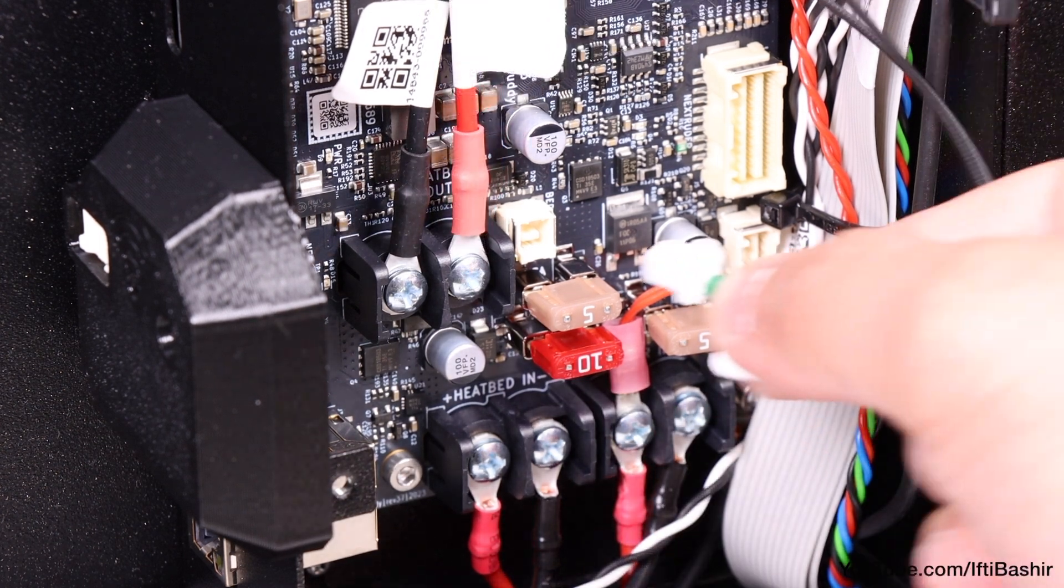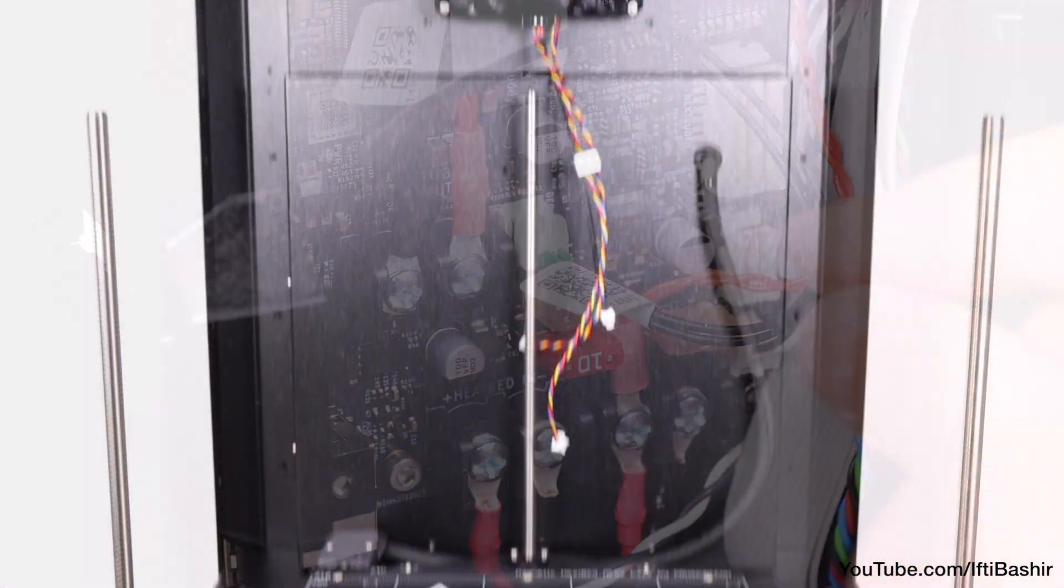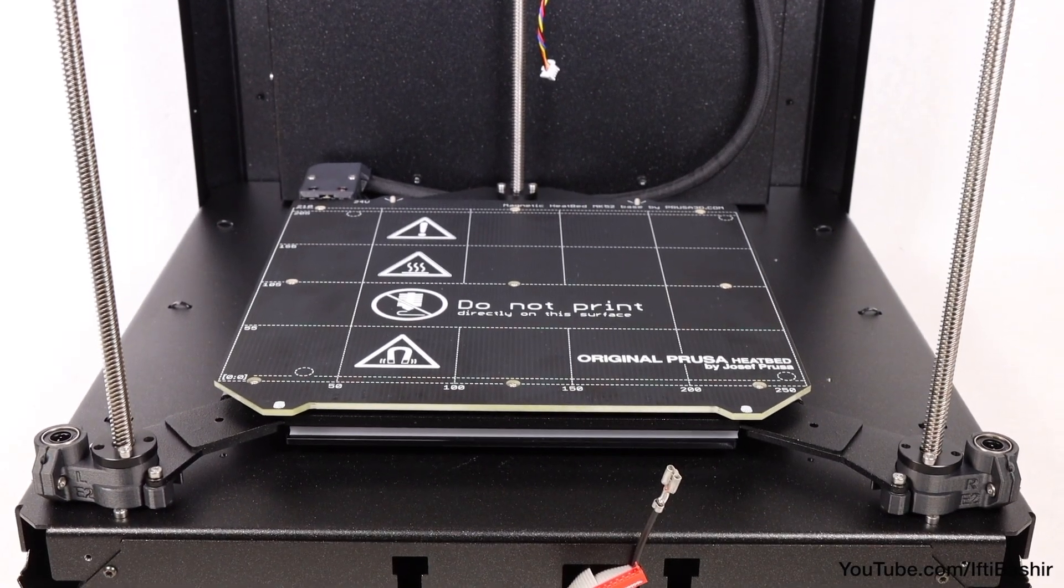Finally, plug the heatbed thermistor connector to the slot next to the power terminals. That's it, heatbed assembly installation complete.